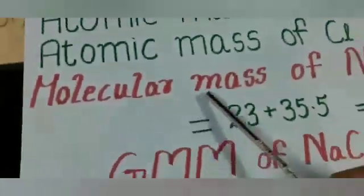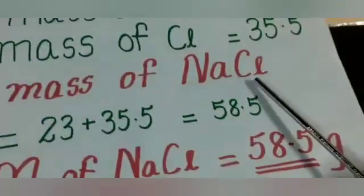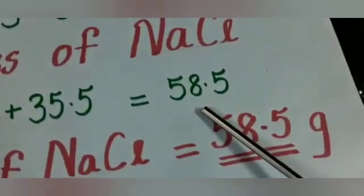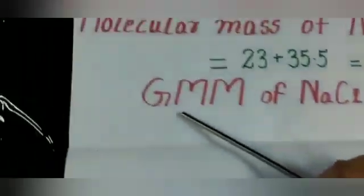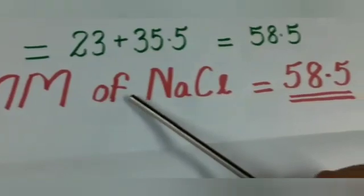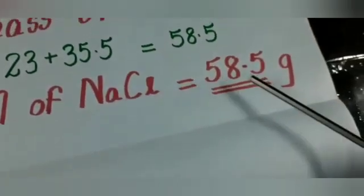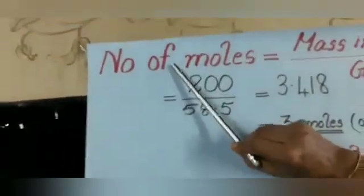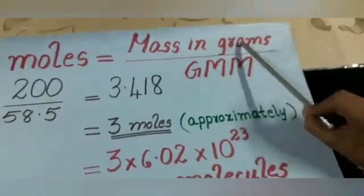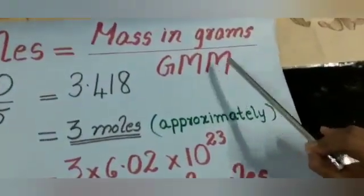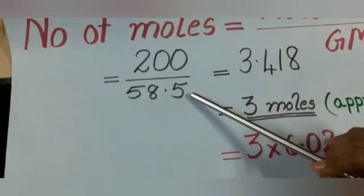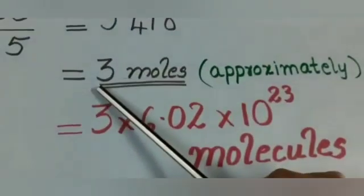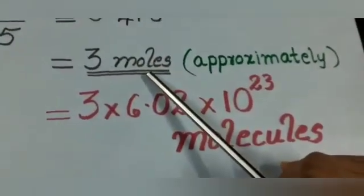From this we calculate the molecular mass of NaCl: 23 + 35.5 = 58.5. Thus the gram molecular mass of NaCl is 58.5 grams. Using the equation: number of moles = mass in grams ÷ gram molecular mass = 200 ÷ 58.5 = 3.418, which is approximately equal to 3 moles.